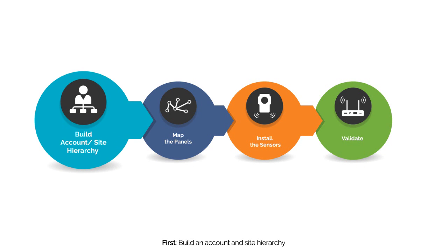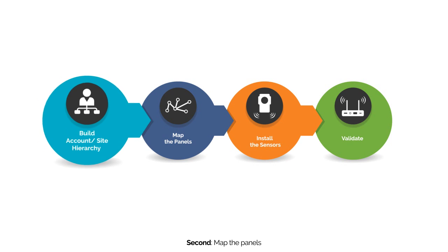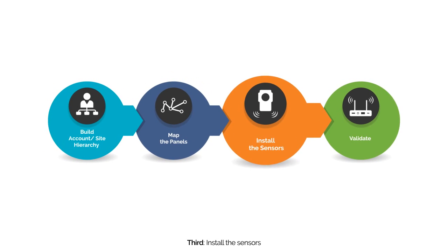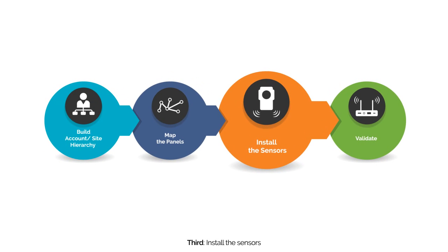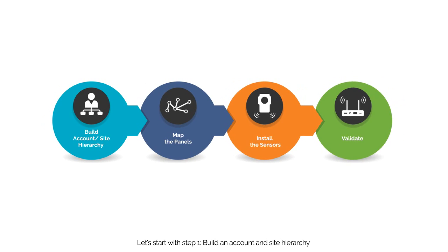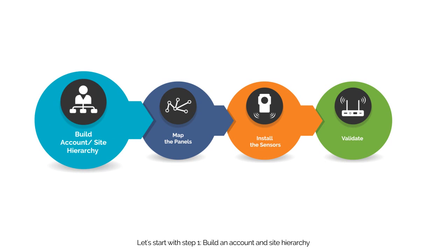Setting a client account using Panoramic Power's deployment tool is fast and easy and consists of four simple steps. First, build an account and site hierarchy. Second, map the panels. Third, install the sensors. And finally, validate the sensor's reception. Let's start with Step 1.